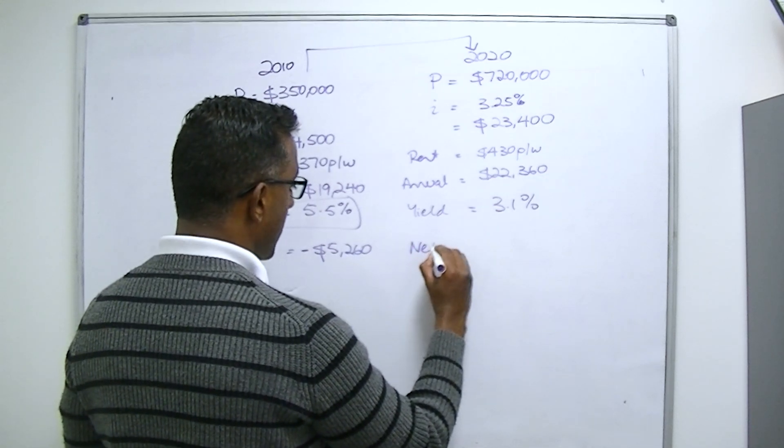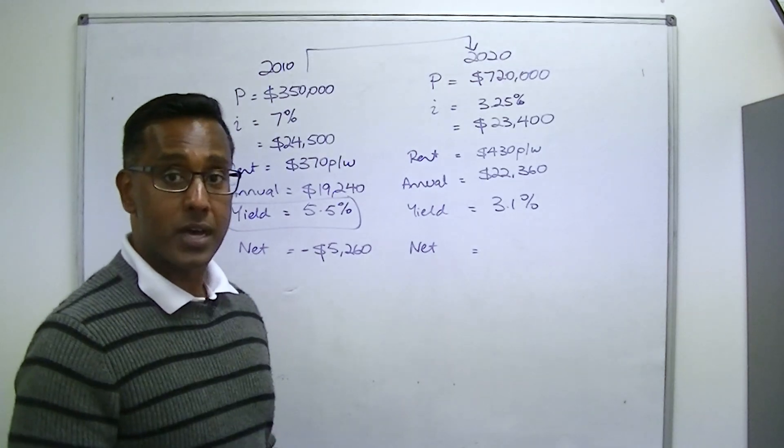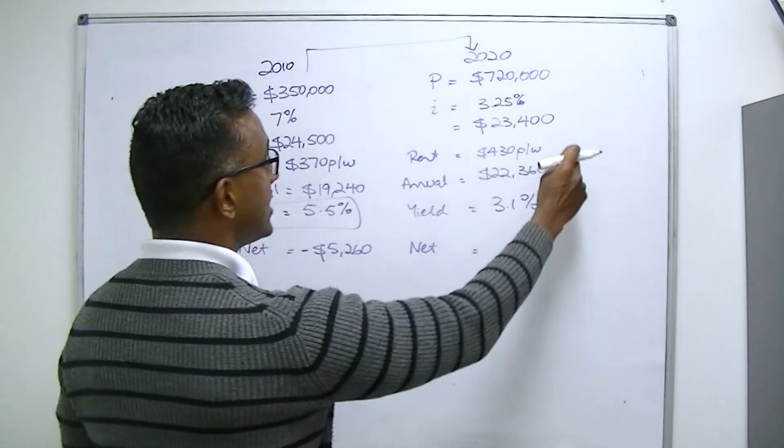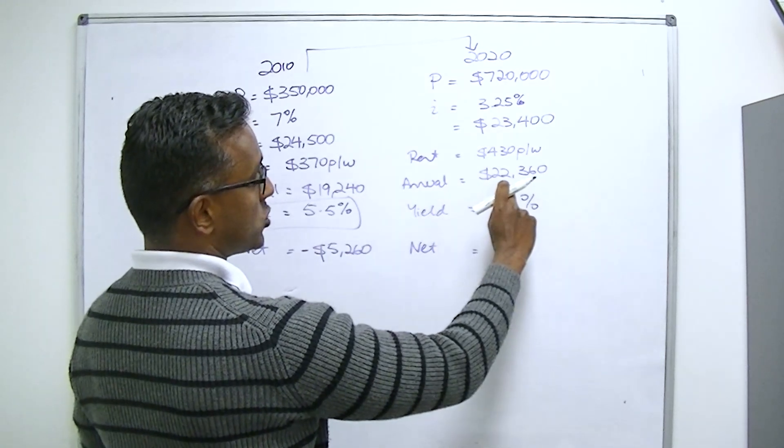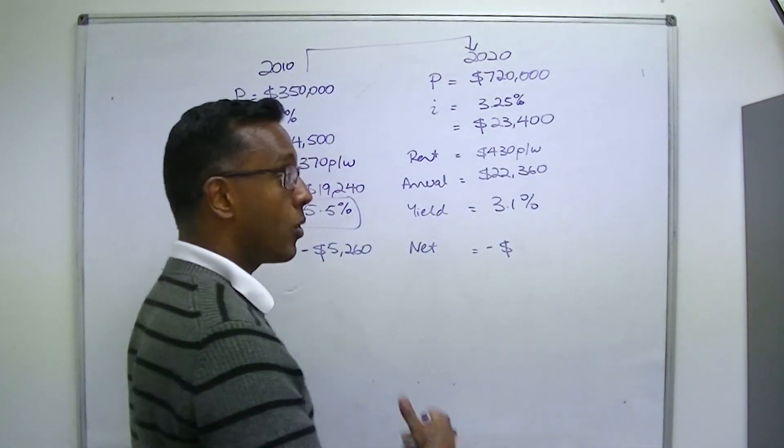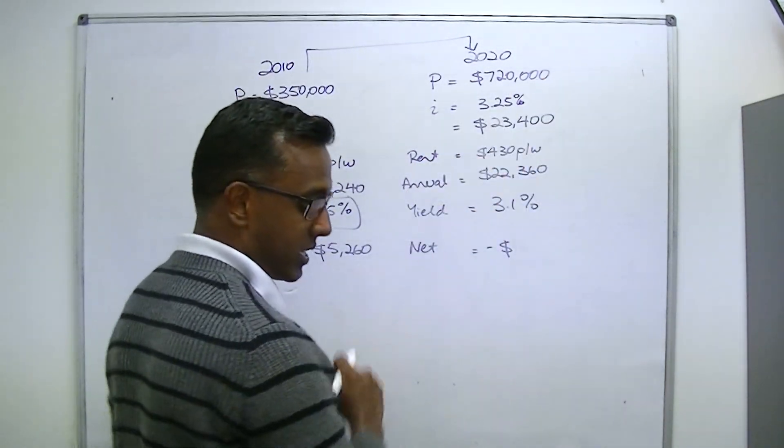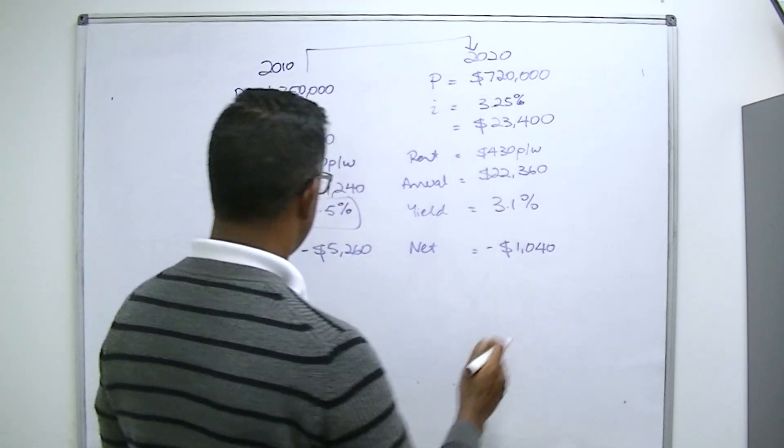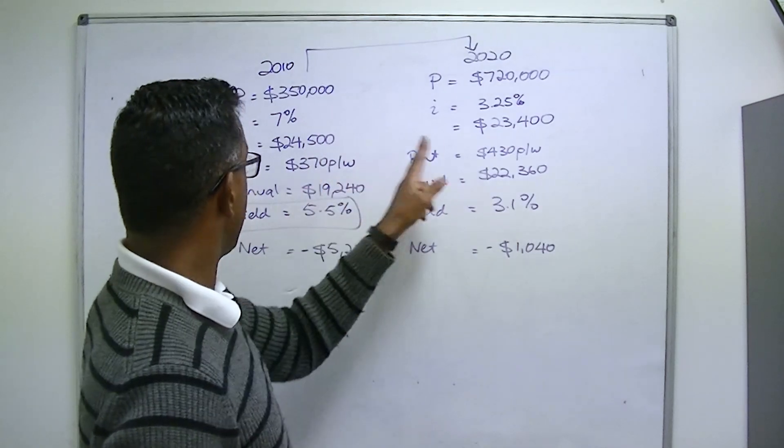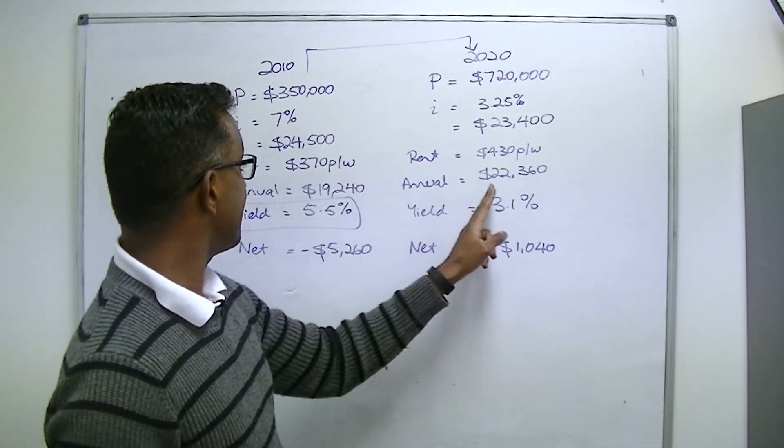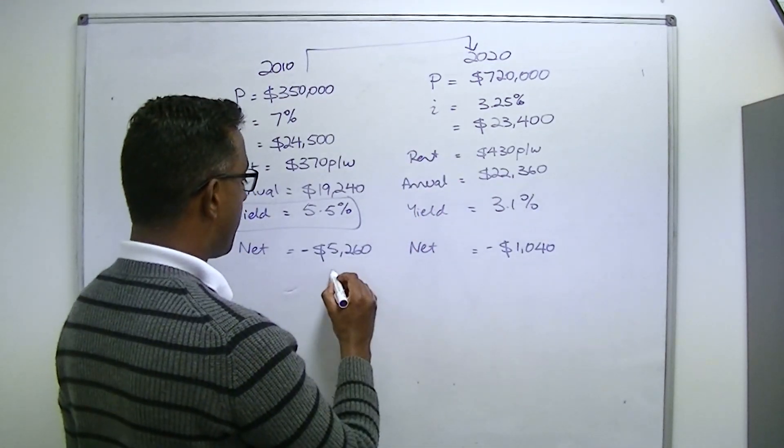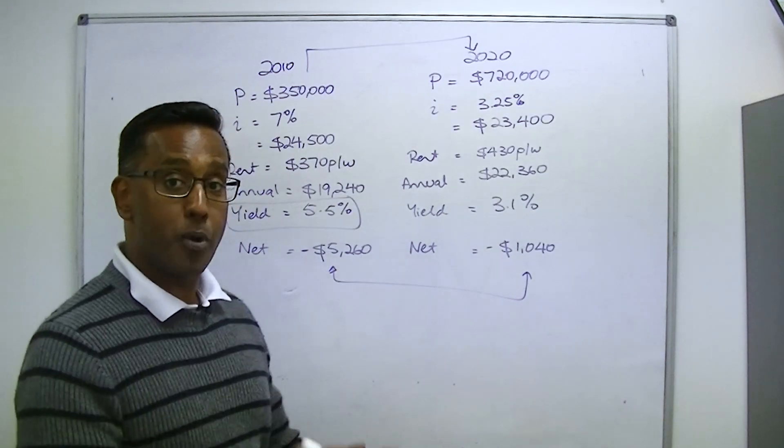If my client was to sell this property for $720,000 on the open market, and someone bought it for that price, and the person who bought it borrowed 100% of the purchase price here as well, today the interest rate is about 3.25%. I know that you can get better than that, but let's just be conservative. Therefore, their annual payments would be $23,400. You can already see that's a little bit cheaper than the interest costs were 10 years ago, even though the property has risen by $370,000, which is some significant capital growth. In fact, over 100% of capital growth is what my client got.